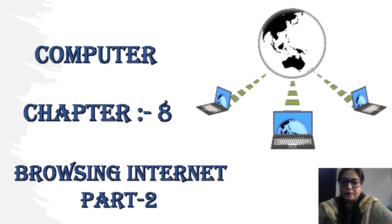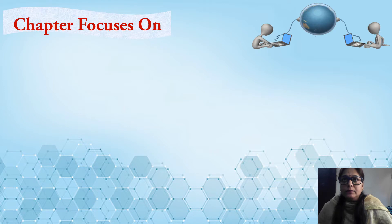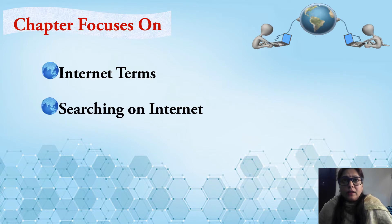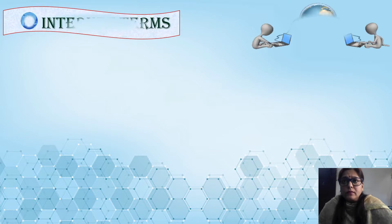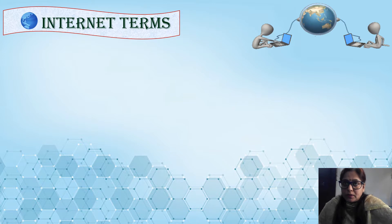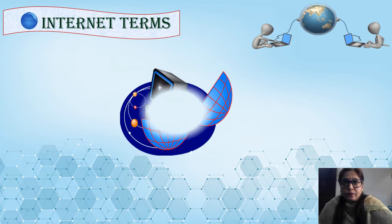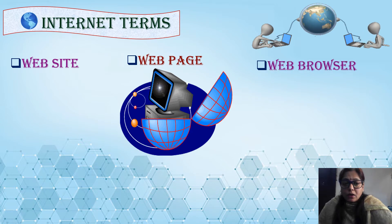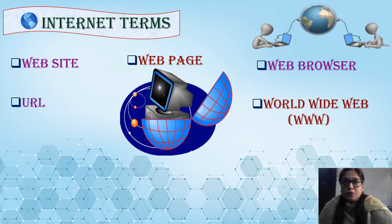So let's start. Today we are going to learn about internet terms, then searching on internet, and learn about email. Now let's start with internet terms. These terms help us to know more about internet. These terms are: website, web page, web browser, URL, and www. Let's get more information about each term one by one.